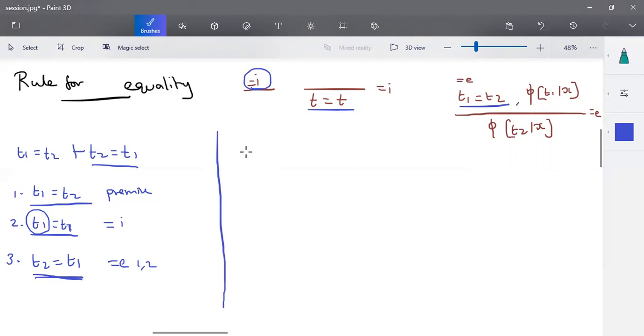I'll take one more example. t1 equal to t2 is given and the t2 equal to t3 is also given. So what does that mean? You can write it as t1 equal to t3. So what are the premises here? t1 equal to t2 is a premise. And another premise is t2 equal to t3. This is very simple. This is also a given premise.